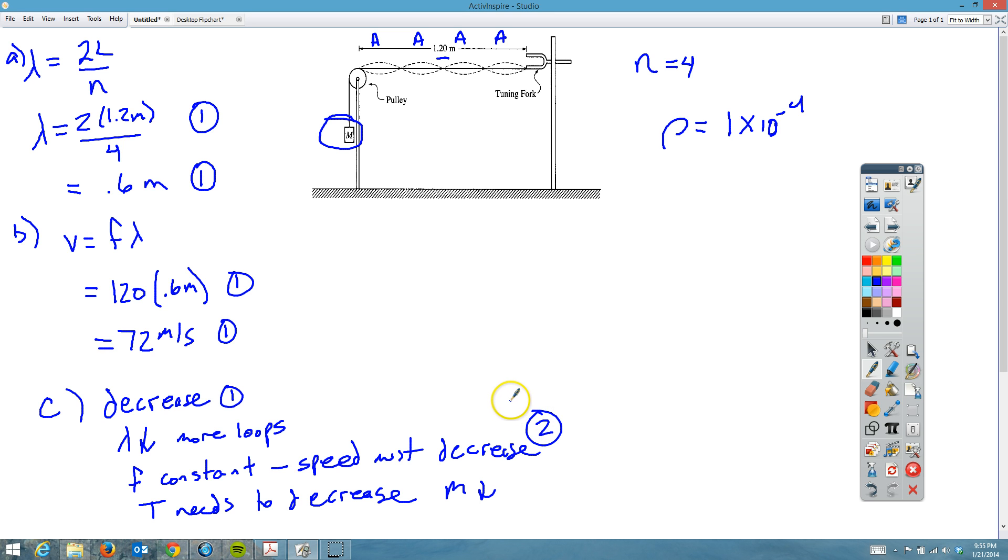Finally, what we want from the last part is: a point on the string at an antinode travels a total vertical distance of 4 centimeters in one complete cycle. What is the amplitude of the oscillation?